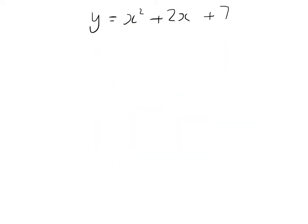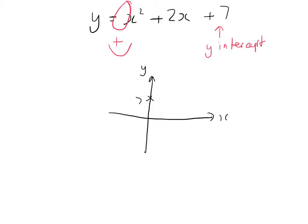Let's look at this next curve. We have a positive coefficient, so again it's a happy curve, and it cuts the y-axis at plus 7. Again we have possibilities — maybe 7 is the minimum point, or maybe the curve is slightly to the right or slightly to the left of that, with the minimum point elsewhere.